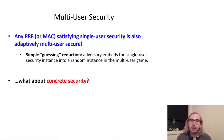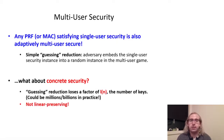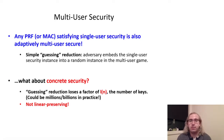With that in mind, let's look back at our guessing reduction to see how well it preserves concrete security. Unfortunately, as it turns out, the answer is not very well. We can see that the single user security in this case requires L of N times as much work as the multi-user adversary, since it requires the multi-user adversary to both succeed and pick the correct instance to break.